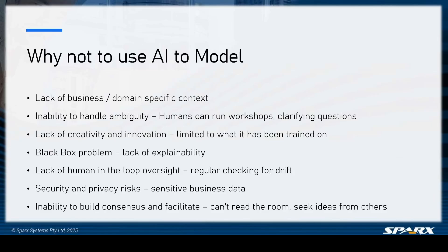First off, why not use AI to completely model your system? It doesn't have a whole lot of business domain-specific context about your business. It doesn't know the intricate ins and outs of exactly how your business runs — it can only operate in a generic and generalized manner. It has a hard time handling ambiguity and can only work with the information it's been given. Humans are much better at running workshops, clarifying questions, and really digging down to the single source of truth that your model needs to capture.